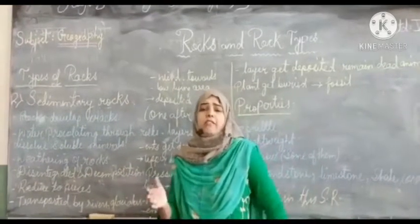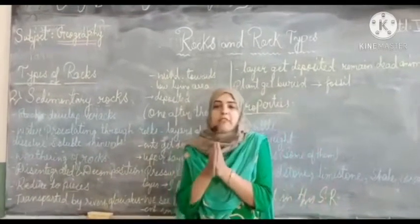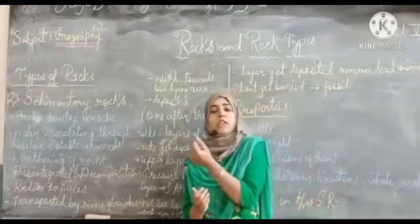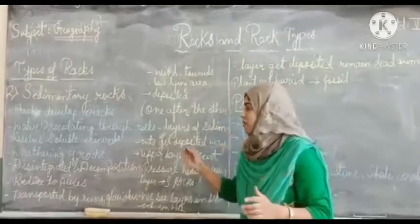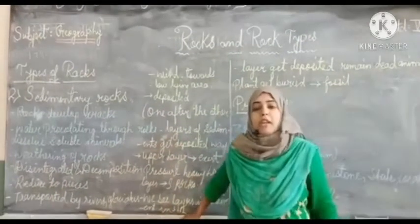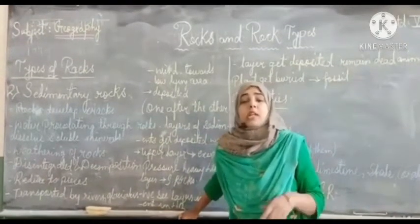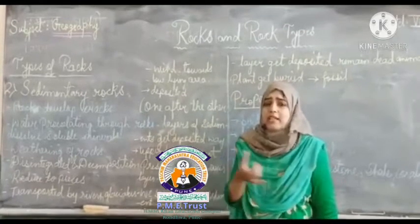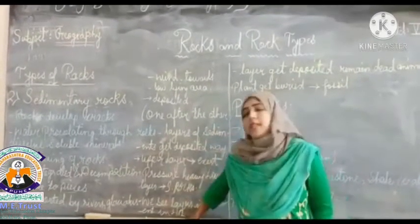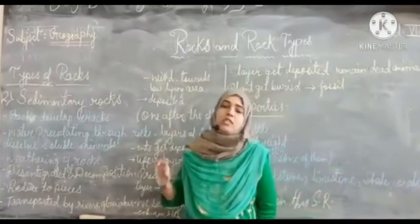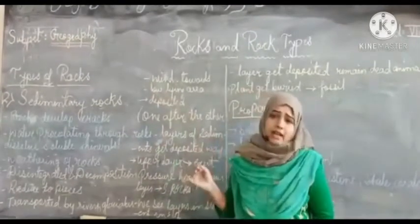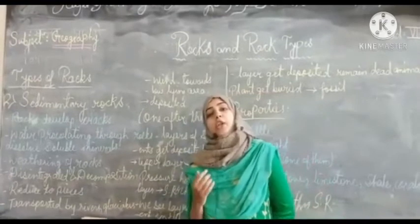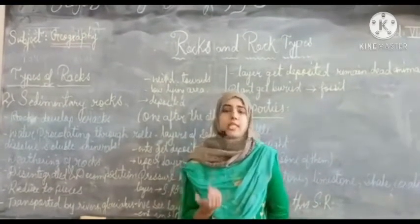To summarize the formation steps: first the rocks crack, second weathering occurs, after weathering they get disintegrated, then they get decomposed, and after decomposition they are reduced into small pieces in crystal forms. These small pieces are known as sedimentary rocks.